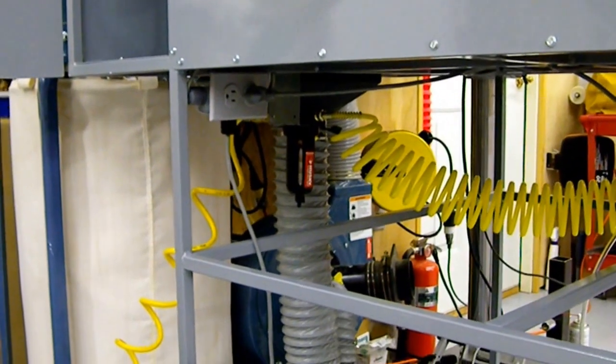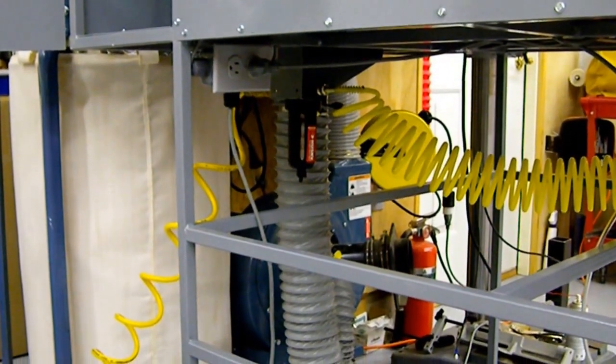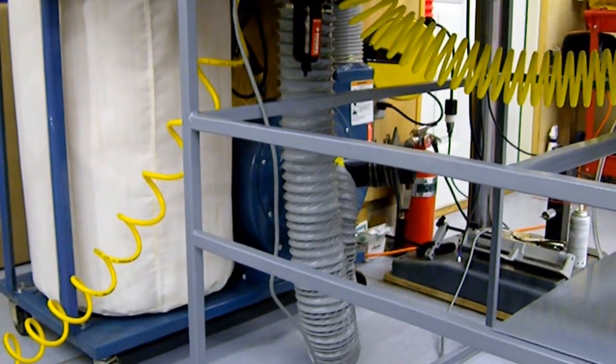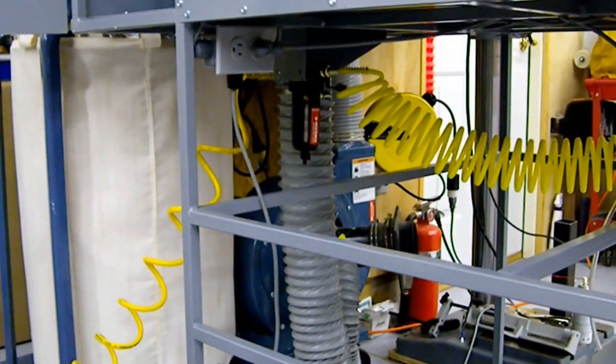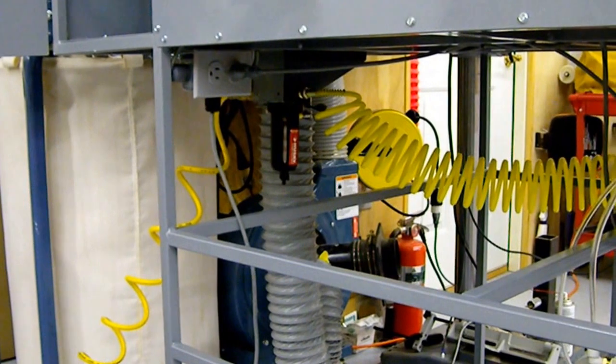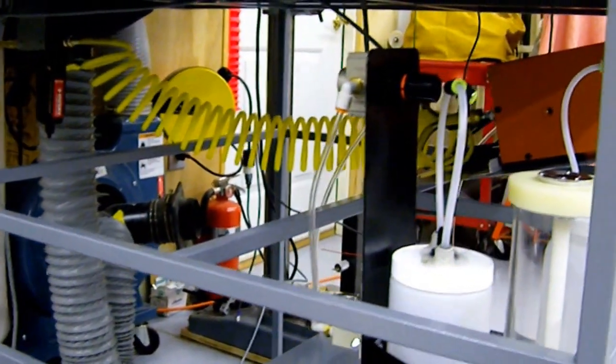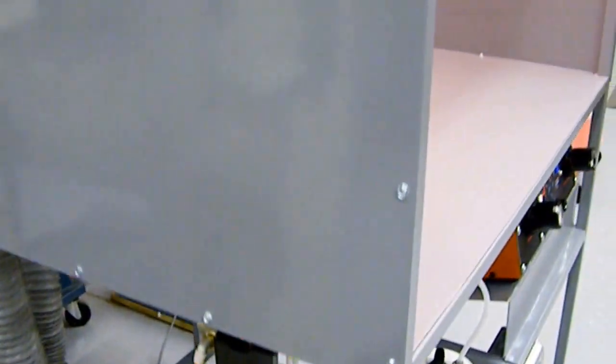We also have a 4-inch shop vac system hooked up with a micron filter on top of it to ensure that we get all of the excess powder out of the shop while we are working.